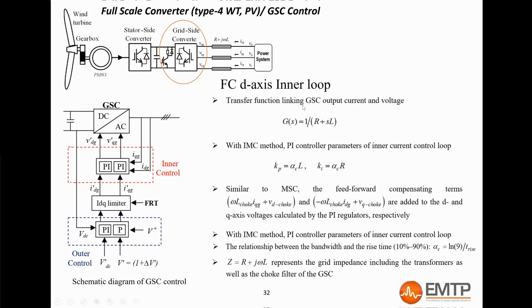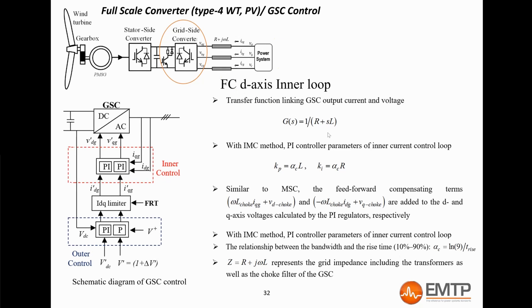For the grid-side converter, the gains of the inner loops depend on the total impedance seen by the converter. The transfer function is shown here, where R and L are the resistances and inductances of the choke filter, the converter transformer, the park transformer, and the grid Thevenin equivalent. In the generic model mask, the user can set the rise time, which determines the inner loop speed. It is typically set to 10 milliseconds. The voltage control is at the converter terminal, but the voltage measured is after the choke filter. Therefore, and similarly as the machine-side converter, a feed-forward compensation is done before putting the converter voltage reference back to the ABC domain.